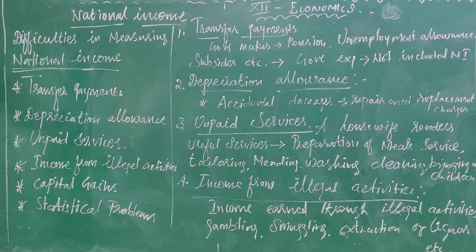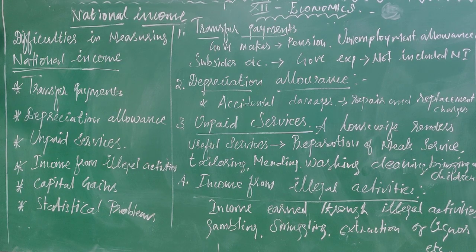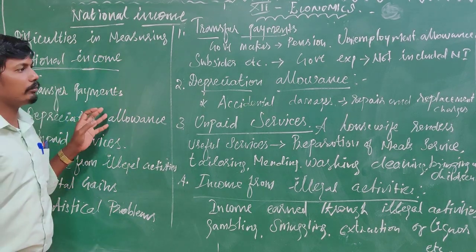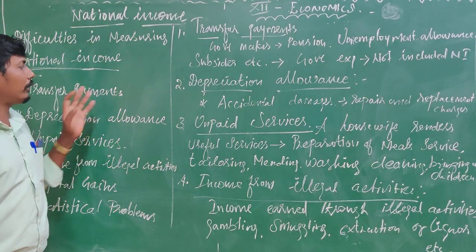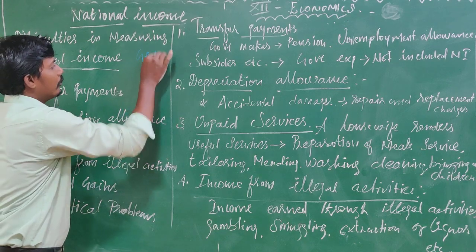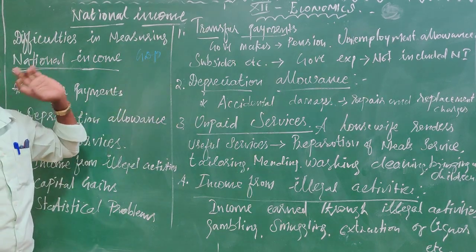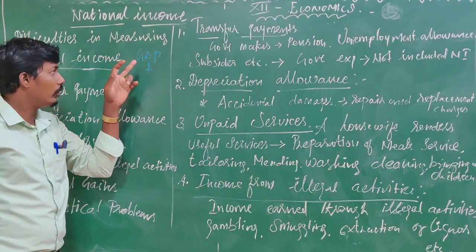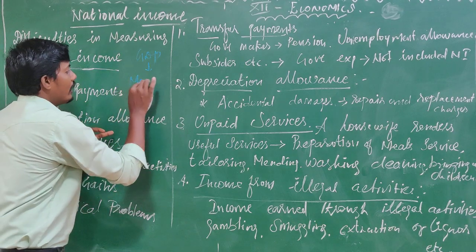It is difficult to find national income; we have to calculate the national income. This is a 5-mark question. We have to calculate GDP — Gross Domestic Product. GDP is important. It is the domestic product.